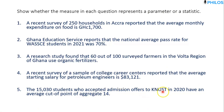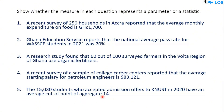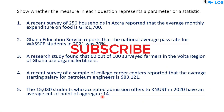Question five: the 15,030 students who accepted admission offers to KNUST in 2020 have an average cutoff point of aggregate 14. When you look at this — 15,030 students is the entire group, not just part of it. So since it is the entire group, this average aggregate of 14 is a parameter. I want you guys to comment below with some other examples, subscribe for more tutorials, thank you and see you in the next tutorial.